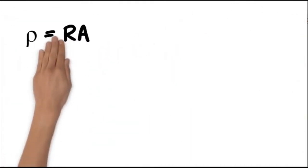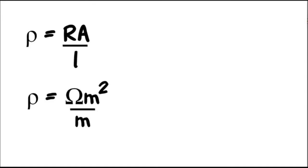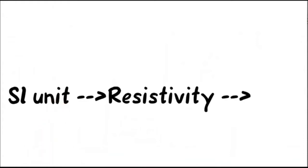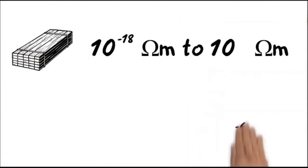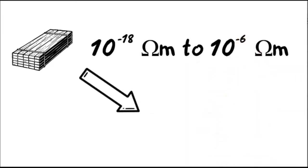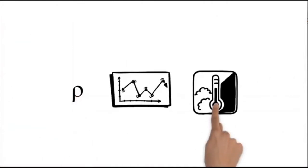From the equation, R × A equals ρ × L, which implies ρ equals R × A by L. Since the SI unit of resistance is ohms, the SI unit of resistivity is ohm-meter (Ω·m). Materials having a resistivity in the range of 10⁻⁸ Ω·m to 10⁻⁶ Ω·m are considered very good conductors. The resistivity of materials varies with temperature.